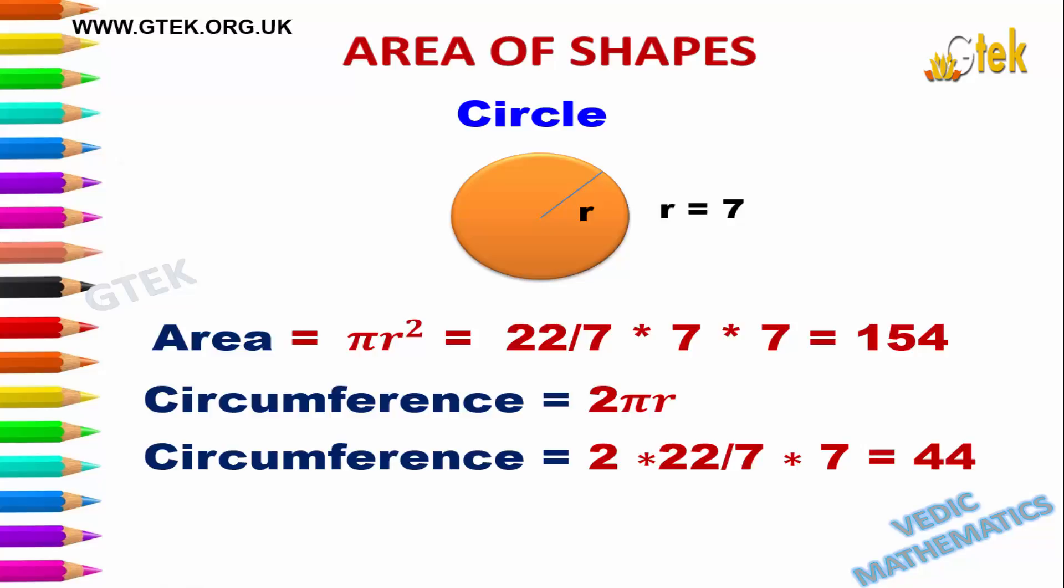The area of circle is pi r squared. Pi is a mathematical symbol which has the value of 22 divided by 7. Applying this value, the area of circle is calculated as 22/7 into 7 into 7.